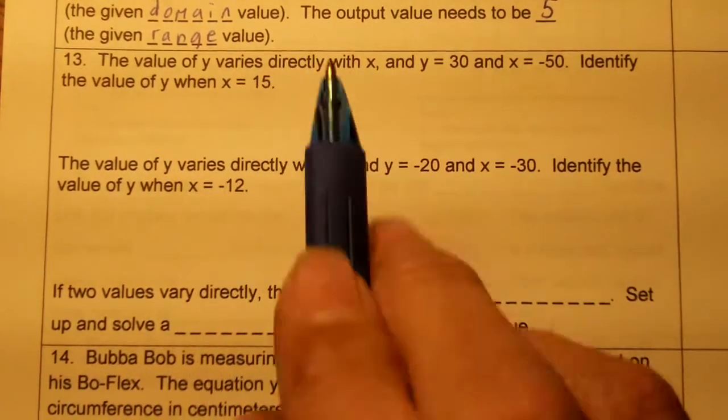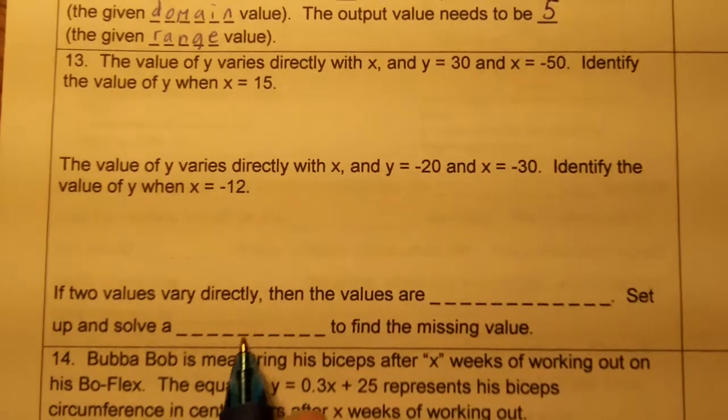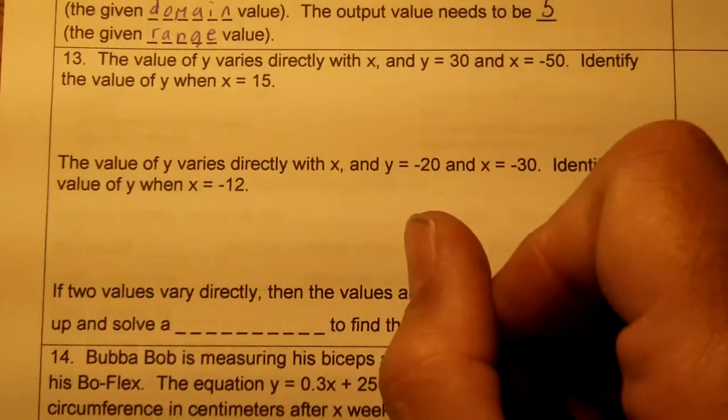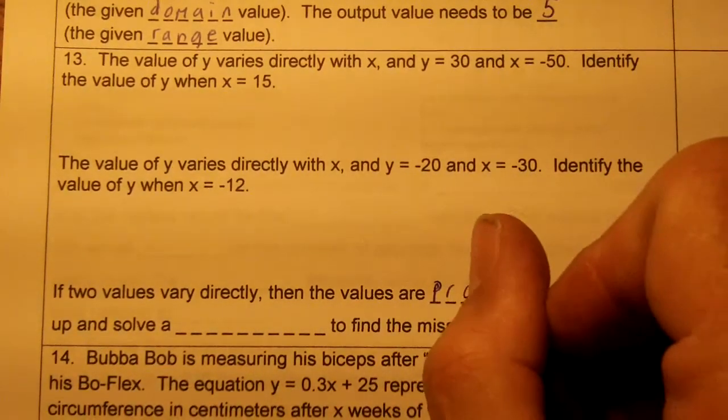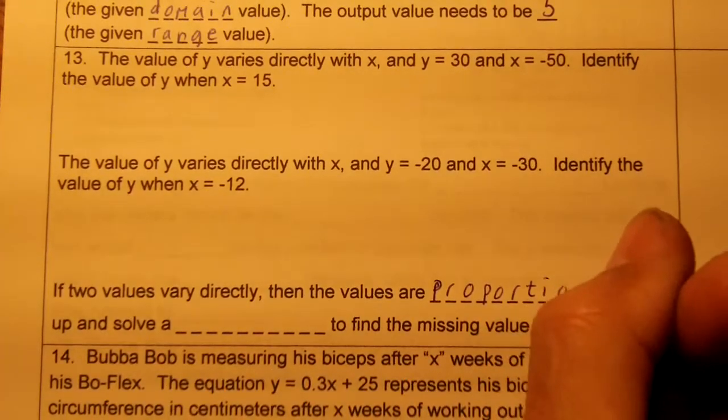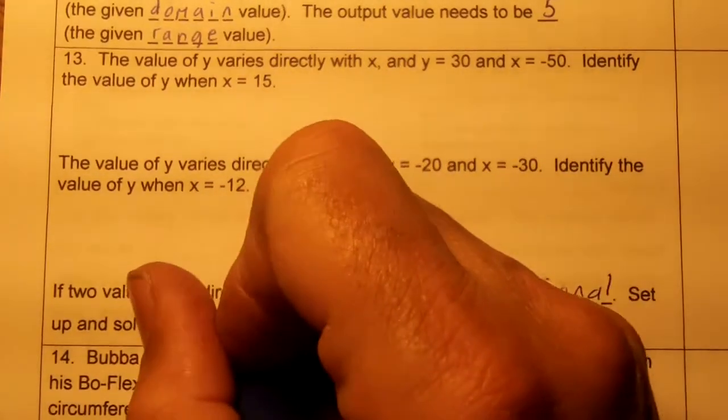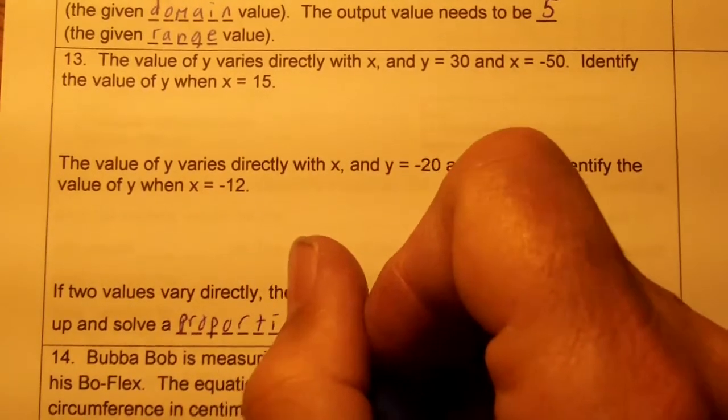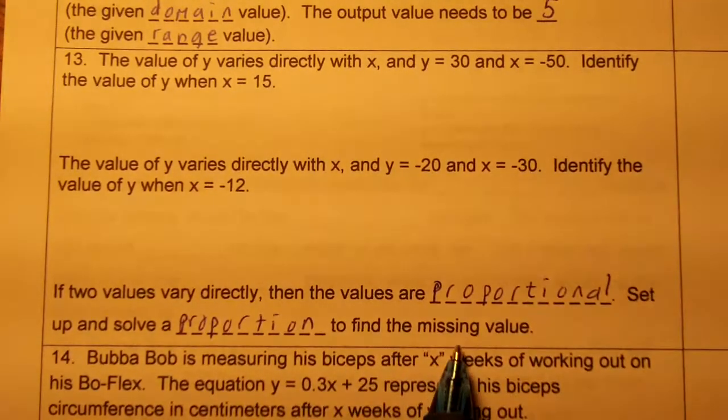Remember, if it varies directly, it's going to be proportional. Let's do it down here. If two values vary directly, then the values are proportional. Set up and solve a proportion to find the missing value.